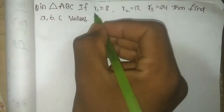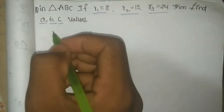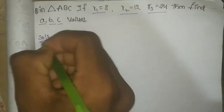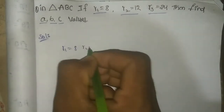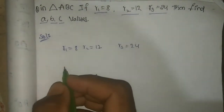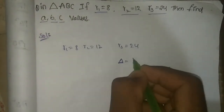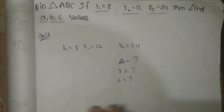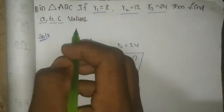In this problem they have given the values of R1, R2, and R3, and we have to find the ABC values. Now we will solve the problem step by step. We need to find three intermediate values: delta (Δ), R, and S. After finding these values, we can then find the ABC values.